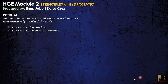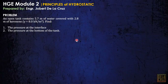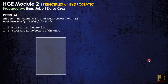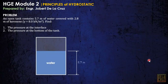Let's try a basic example. An open tank contains 5.7 meters of water covered with 2.8 meters of kerosene. We have the unit weight of the kerosene. We are to find the pressure at the interface and also find the pressure at the bottom of the tank. The water is 5.7 meters in height and the kerosene is 2.8 meters.